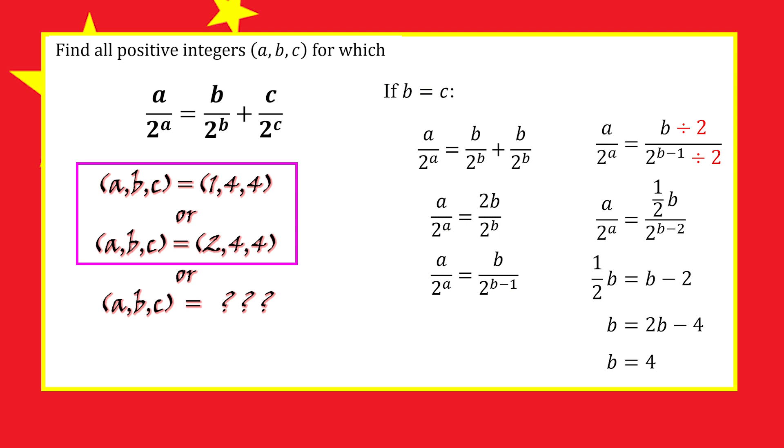How can we prove there are no other solutions where b equals c? Again, it's a size argument. We'll show that for larger values of b and c, the sum is too small to work. For example, if b equals 6...